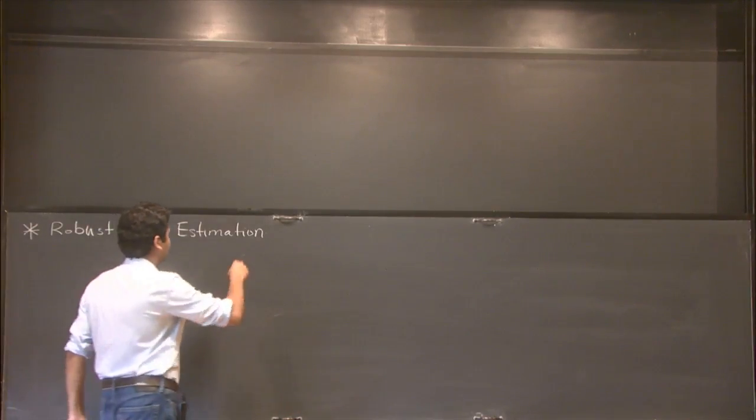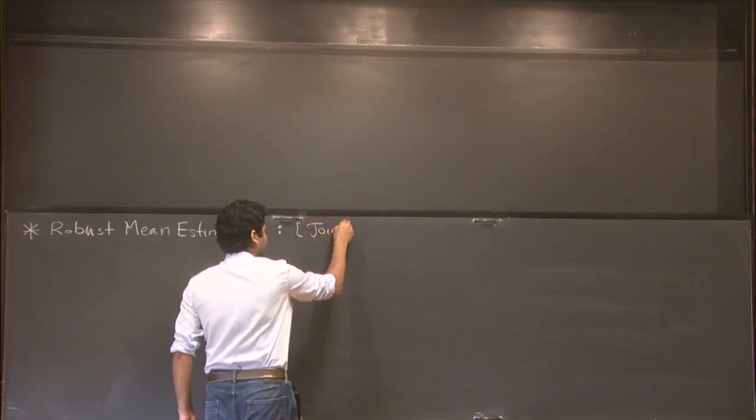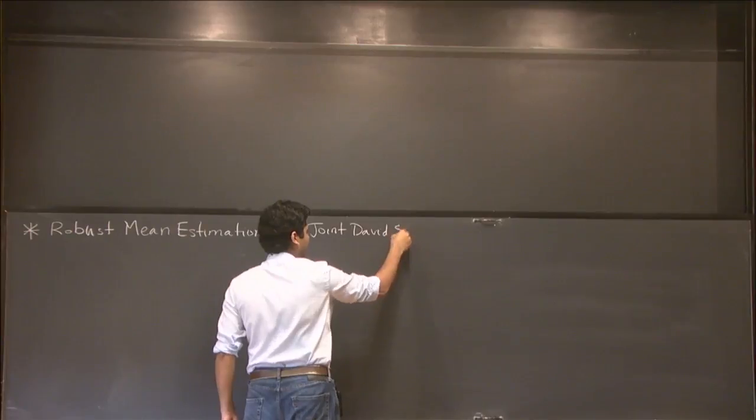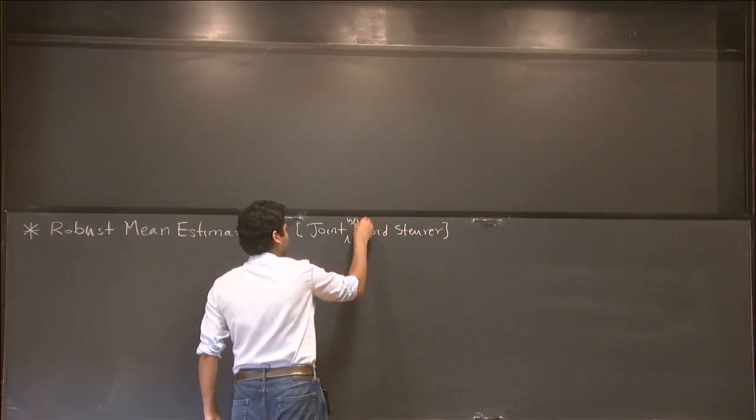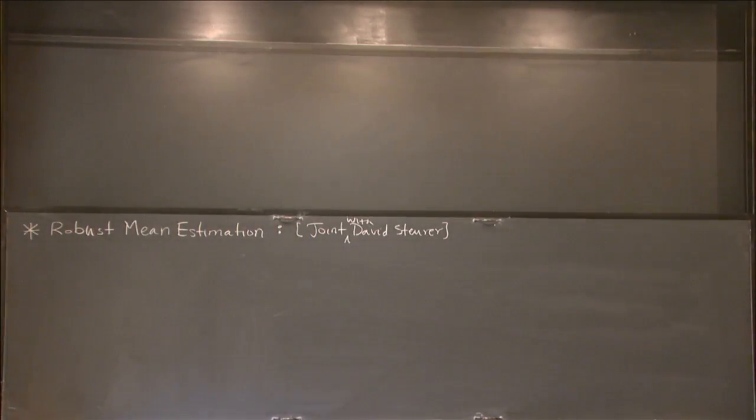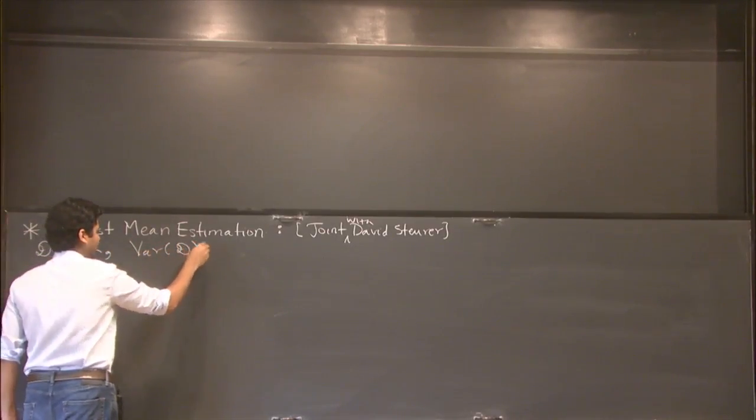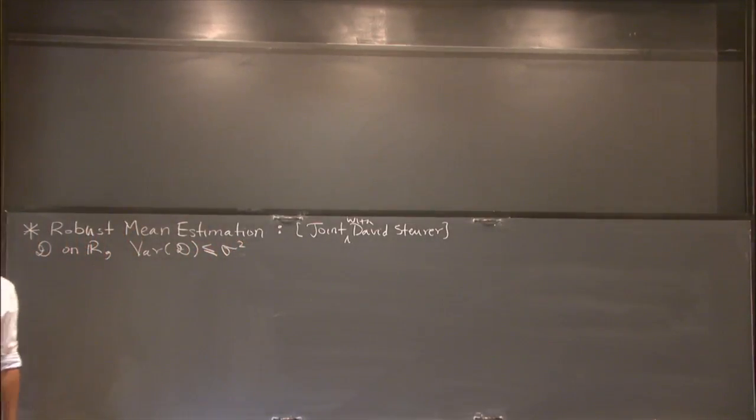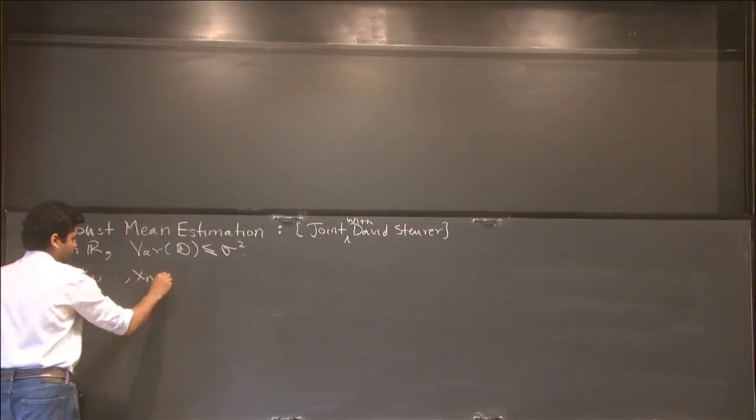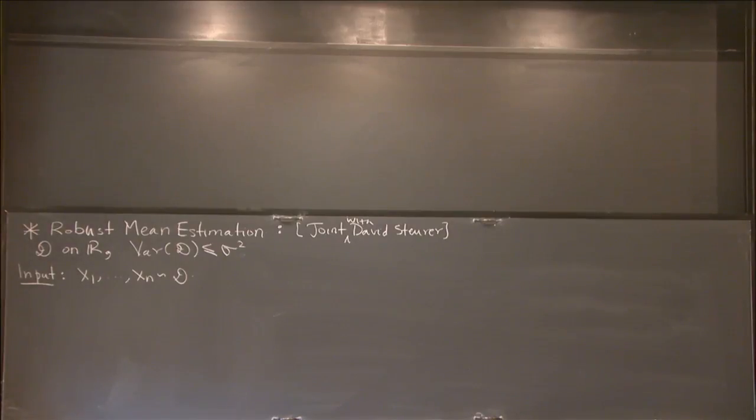Part of what I'm going to say at a very high level is based on joint work with David Steurer, who was a member here one year ago. So what is this problem? Let's say you have an unknown distribution D over the reals, and let's assume the variance of D is at most some sigma squared. Now let's start with a really toy example. Let's say you see IID samples, N of them, drawn from distribution D. I ask you the very simple question: can you estimate the mean of the distribution D by looking at the samples?